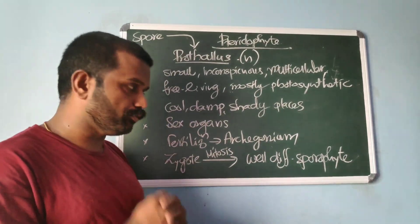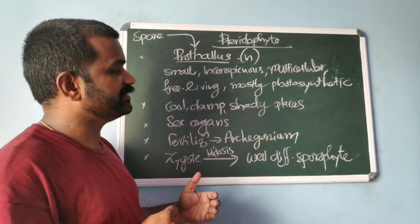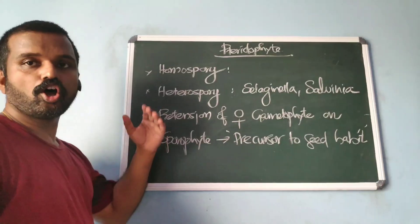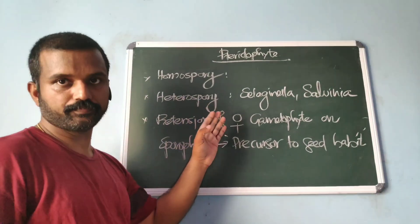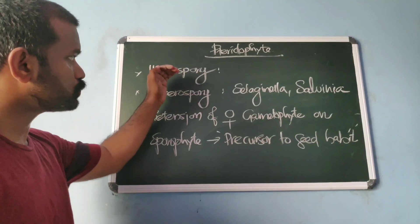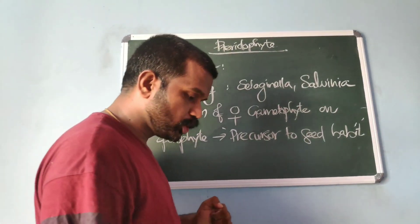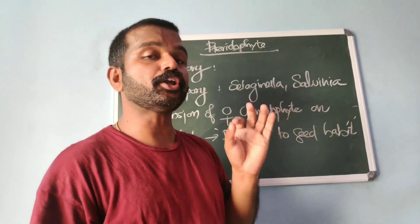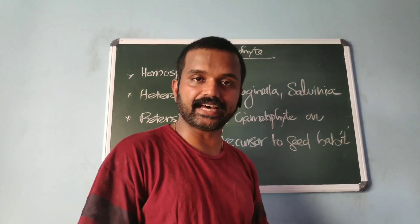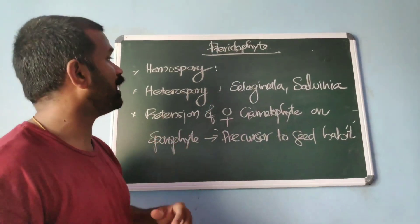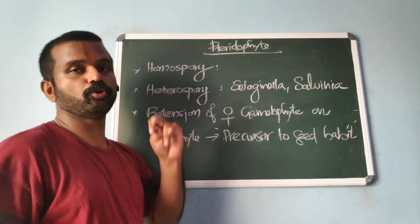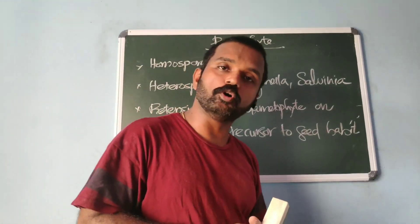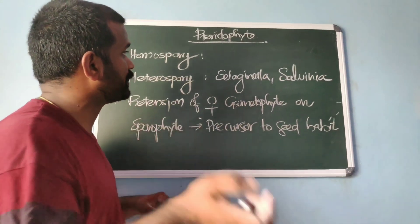Homospory and heterospory: homosporous means all spores are of the same kind. The majority of pteridophytes are homosporous. But a few are heterosporous, meaning spores are dissimilar — they produce two types of spores: small microspores and large megaspores.